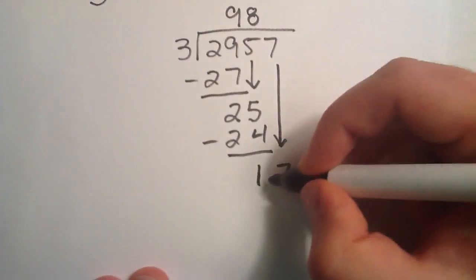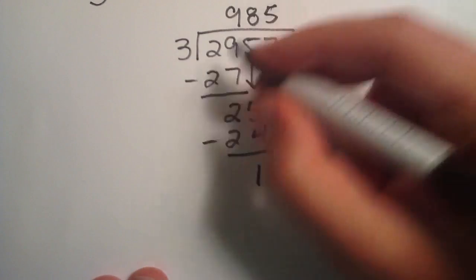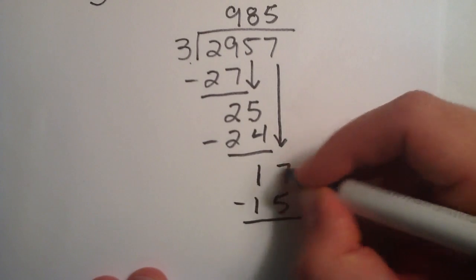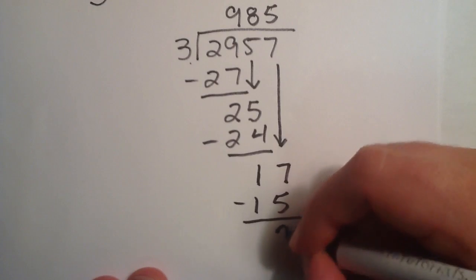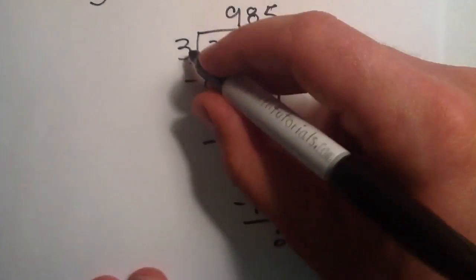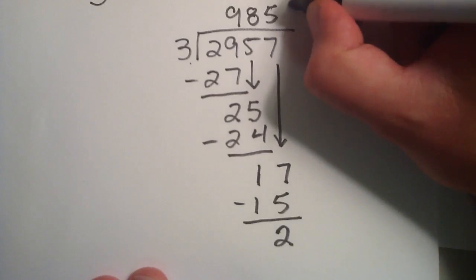3 goes into 17 five times. 3 times 5 is 15. We subtract the 15. 17 minus 15 gives us a 2. 2 is our remainder. It tells us we have 2 parts out of 3, or 2 thirds.